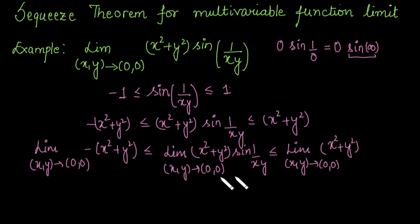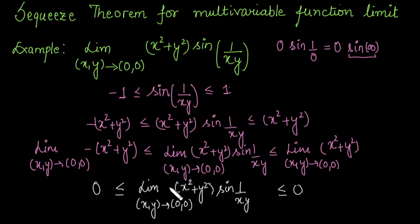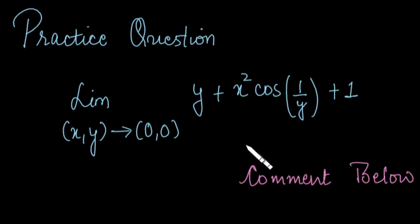On the left side, the limit of -(x² + y²) at the origin is 0, and on the right side the limit of (x² + y²) is also 0. So the limit of the function is squeezed between 0 and 0, giving an overall answer of 0. Here is a practice question: find the limit of the given function as (x, y) approaches the origin — the same concept applies. Write your answer in the comment section.